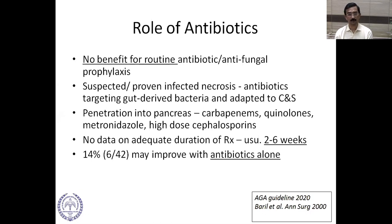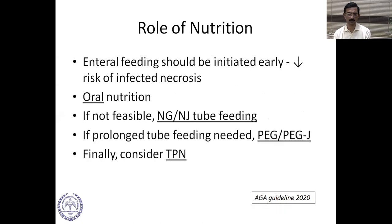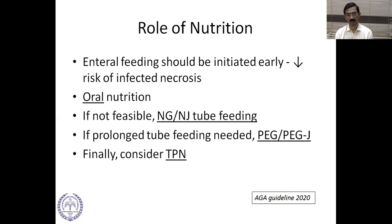14% are found to improve with antibiotics alone. Enteral feeding should be initiated early, as it decreases the risk of infected necrosis by maintaining healthy bowel and reducing bacterial translocation. We start with oral nutrition; if not feasible, nasogastric or nasojejunal tube feeding. If prolonged tube feeding is required, a percutaneous endoscopic gastrostomy with or without jejunal extension may be done. If there is no gastroparesis, PEG suffices; if gastroparesis is present, PEG-J is preferred. If nothing works, total parenteral nutrition is used.